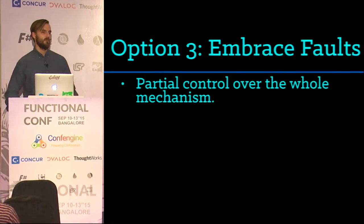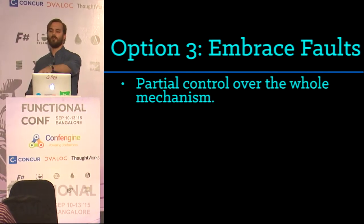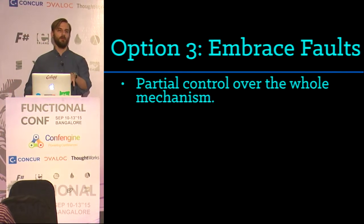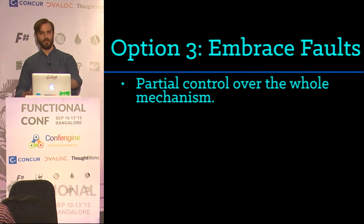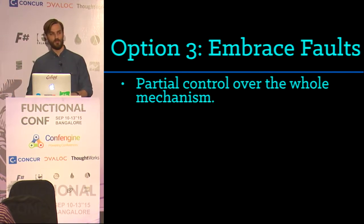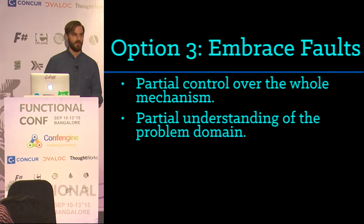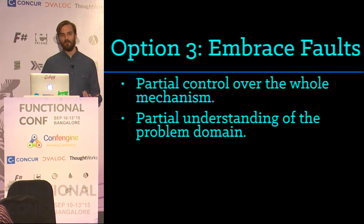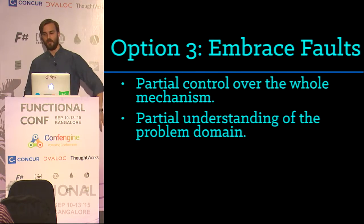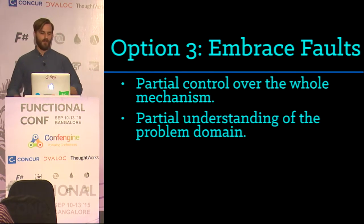When you embrace faults, you are able to have partial control over the mechanism. You need to know some of what the machine is. If I'm going to program a MacBook Air, the partial control I have is the POSIX system it runs on — I know it's a Unix, I know there are some guarantees with that Unix, but I don't truly understand the hardware, and that's okay. I can program to an abstraction. You also need partial understanding of the problem domain. When I'm working on a real-time bidding system, I don't really know advertising — I'm not an advertiser — but I do understand real-time network systems.